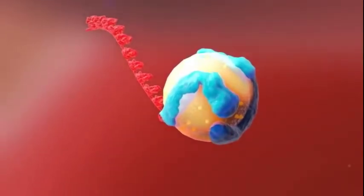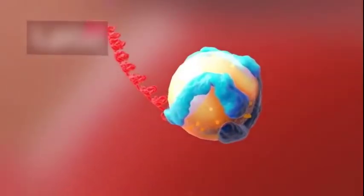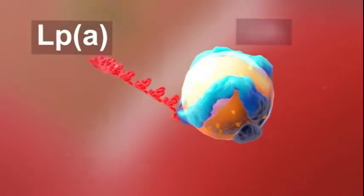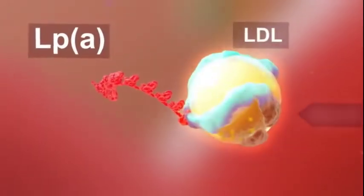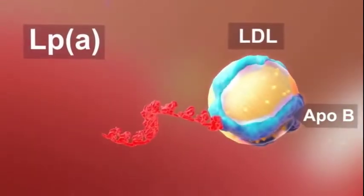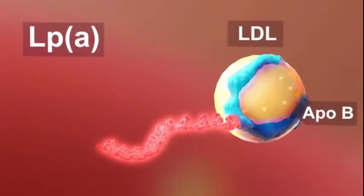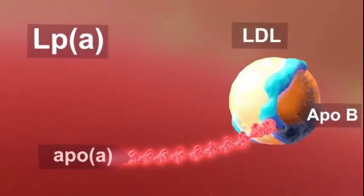Lipoprotein(a) is an atherogenic ApoB-containing lipoprotein that consists of an LDL particle in which the ApoB molecule is attached to a separate, variably sized apolipoprotein called apolipoprotein(a) or apo(a).